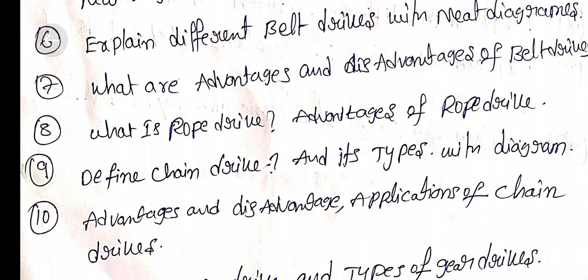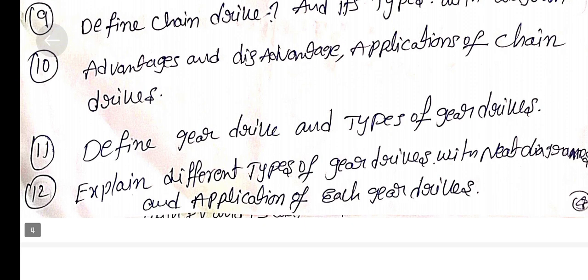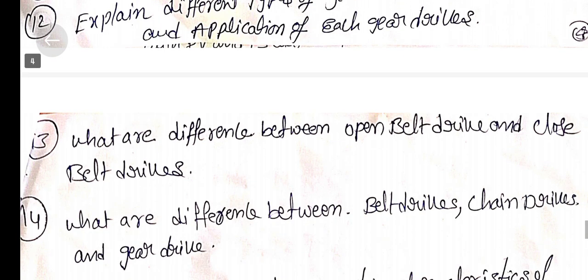Question 9: Define chain drive and its types with neat diagrams. Question 10: Advantages and disadvantages of chain drives. Question 11: Define gear drive and types of gear drives. Question 12: Explain different types of gear drives with neat diagrams and applications of each gear drive. Question 13: What are the differences between open belt drive and closed belt drives?